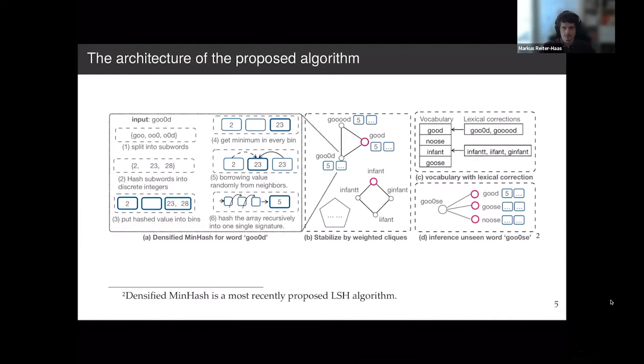To be specific, let's go back to the first step. The input word is good with a typo zero in between, and then we are going to split it into a set of sub-words, and it will go through a hash pipeline. Finally, we will get a hash value 5 for the input word.